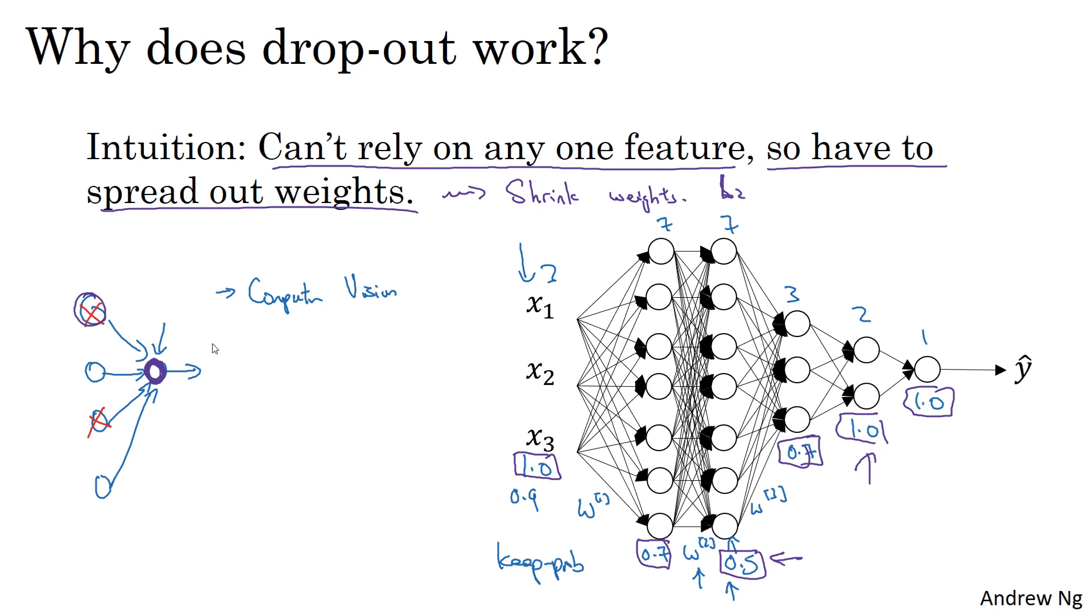One big downside of dropout is that the cost function J is no longer well-defined. On every iteration, you're randomly knocking off a bunch of nodes.